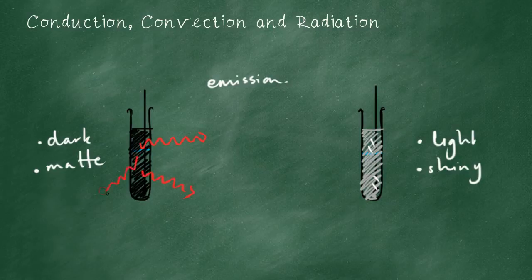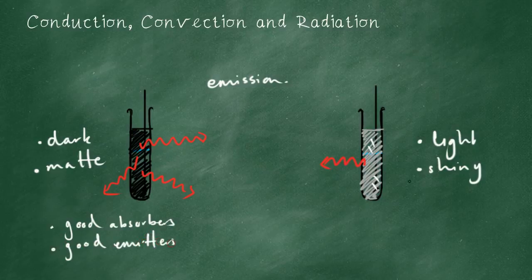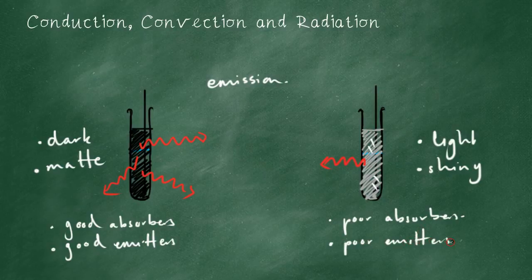We say dark and matte are good absorbers and good emitters of infrared. And light and shiny are poor absorbers and poor emitters of infrared. Pretty easy to remember that, I think, but make sure you do.